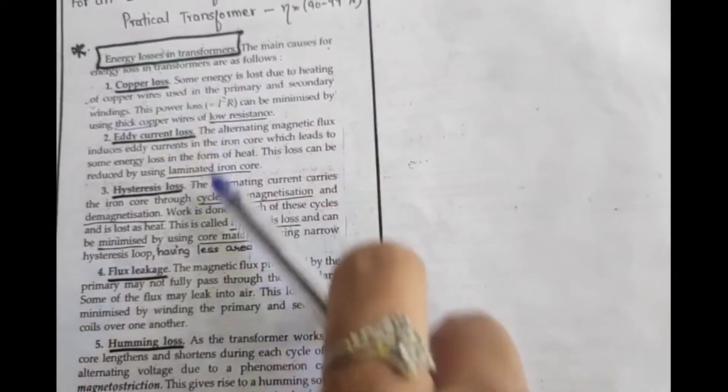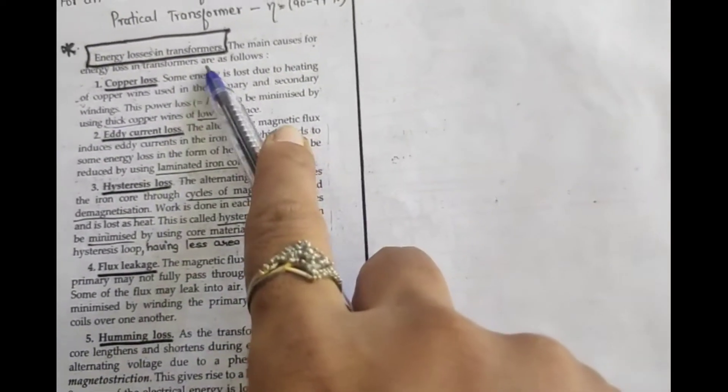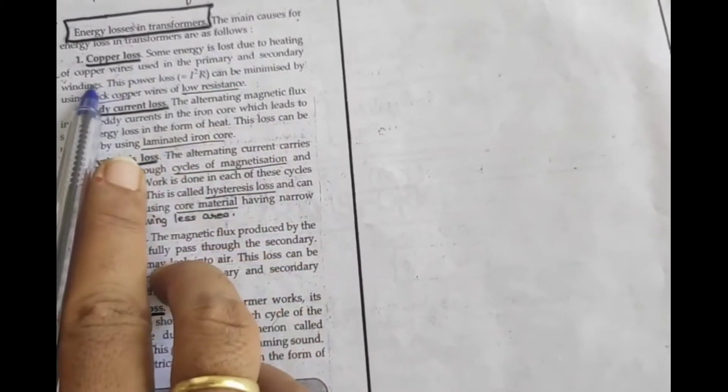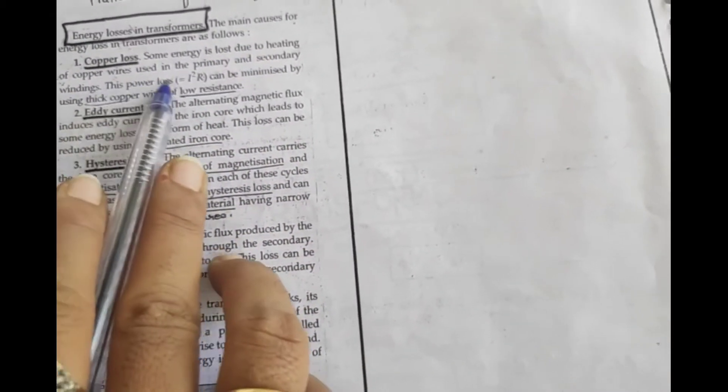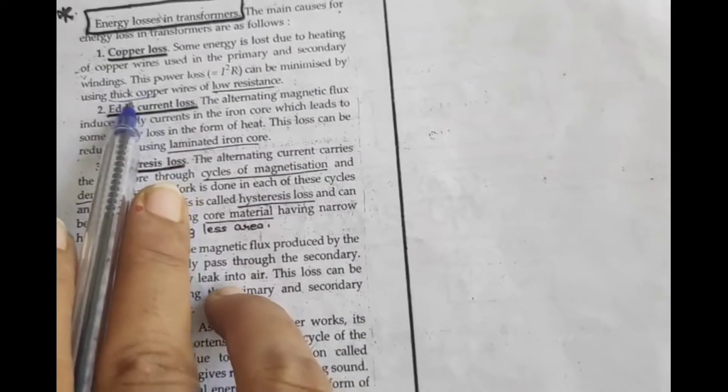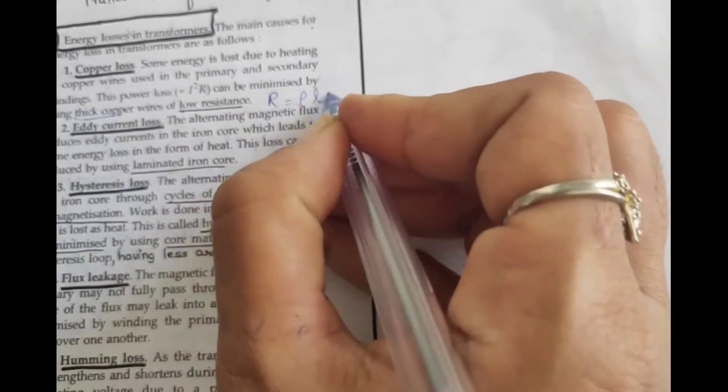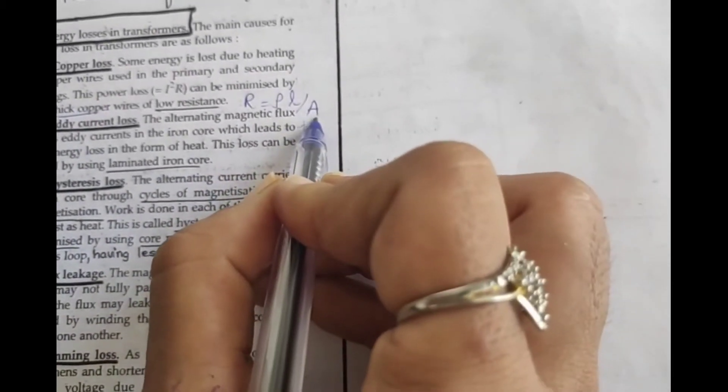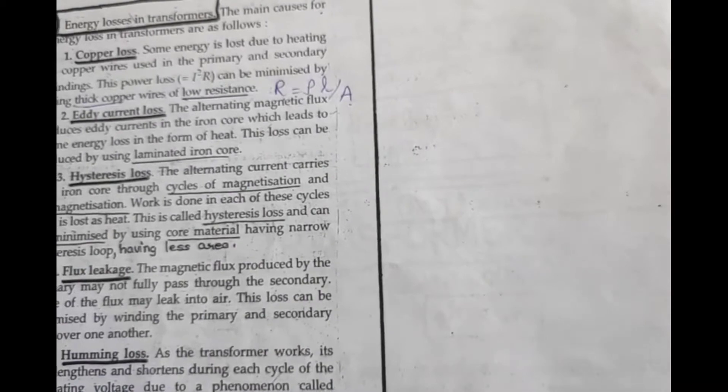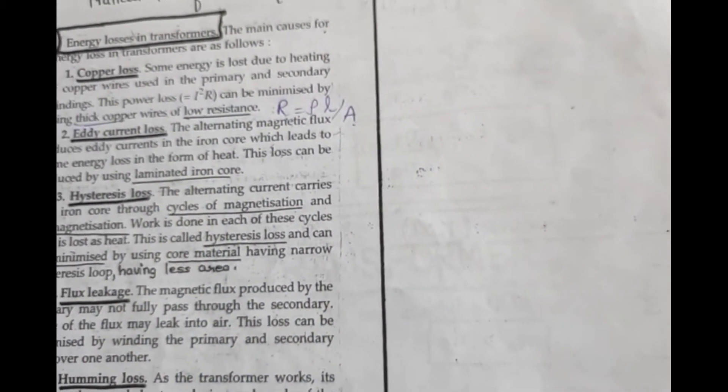Now let's take some conceptuals. Let's discuss energy losses. From these 5 points, conceptuals will be formed. What are the factors due to which energy losses occur in transformer? First is copper loss, which is due to resistance of the windings. This can be minimized by using thick copper wire in the transformer, meaning thick wire. Then R will become what? It will become less. And power is I²R, so if R becomes less, then power losses will also become less.